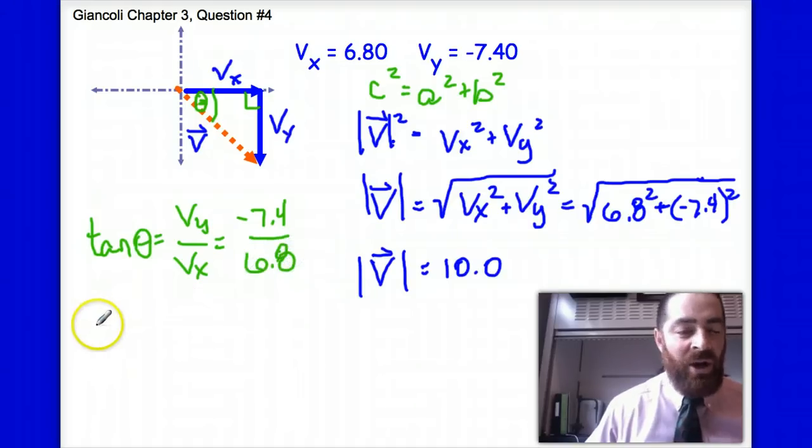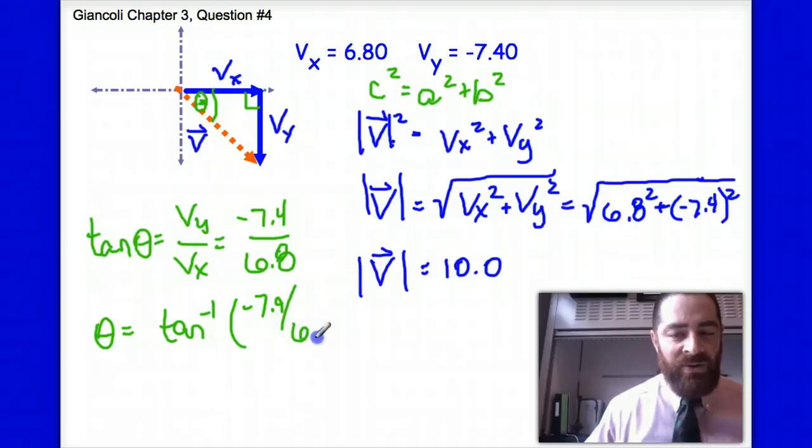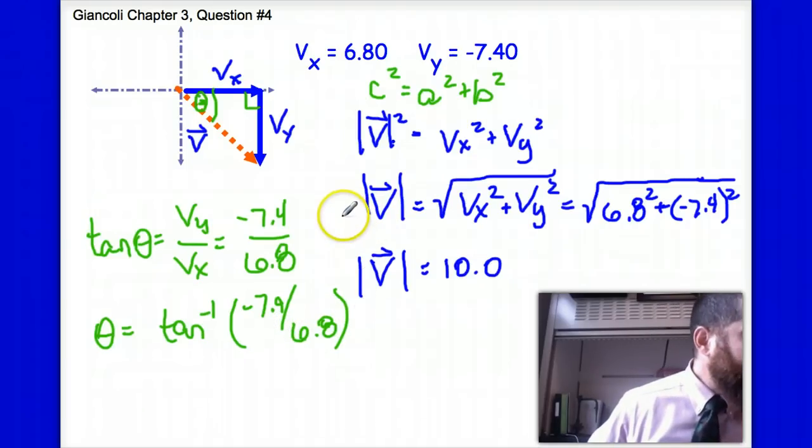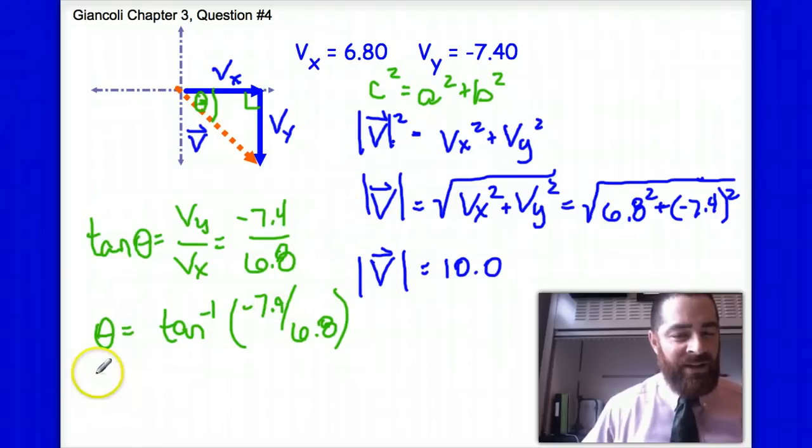Taking the inverse tangent or the arc tan of both sides, I get theta is equal to inverse tangent of negative 7.4 units over 6.8. Plugging that into my calculator, I get negative 47 degrees being theta, negative 47.